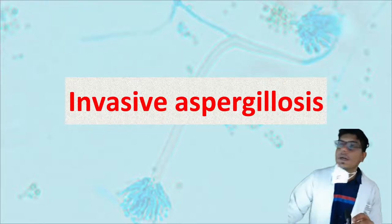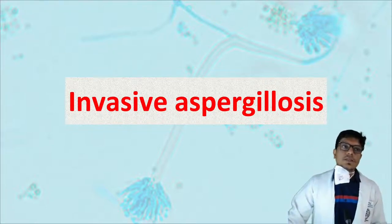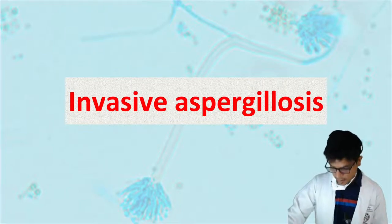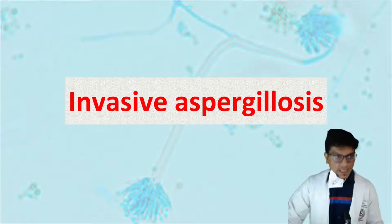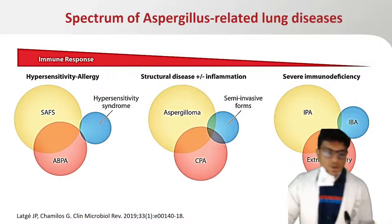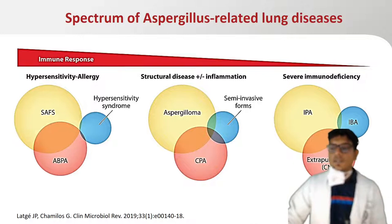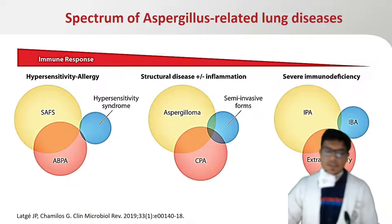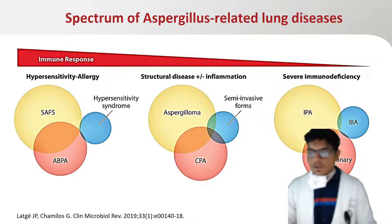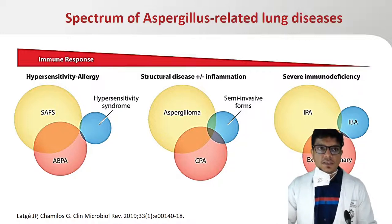I will be discussing invasive aspergillosis, which is the most common invasive fungal disease, with increasing recognition of disease burden in critically ill populations over the last decade. The spectrum of aspergillosis and Aspergillus-related lung diseases varies with the underlying immune condition — ranging from hypersensitivity forms including ABPA in atopic individuals, to invasive forms including invasive pulmonary aspergillosis in patients with underlying immunosuppression including neutropenia.